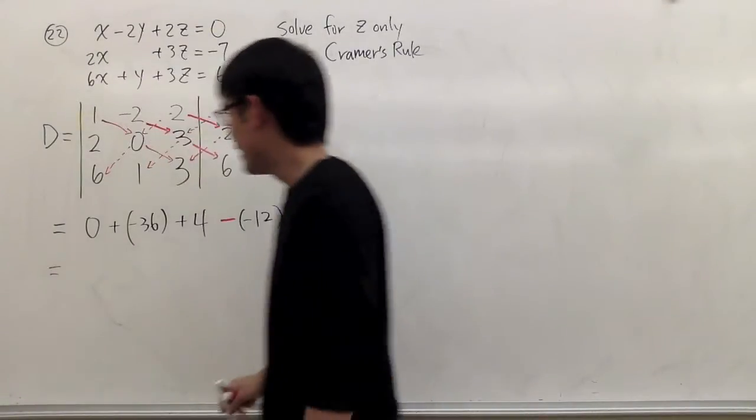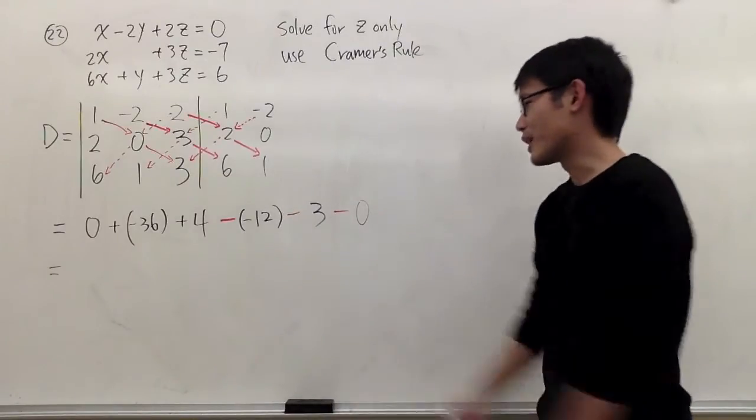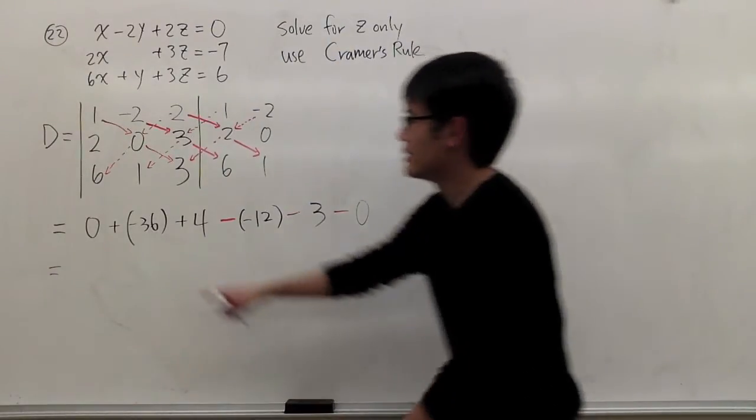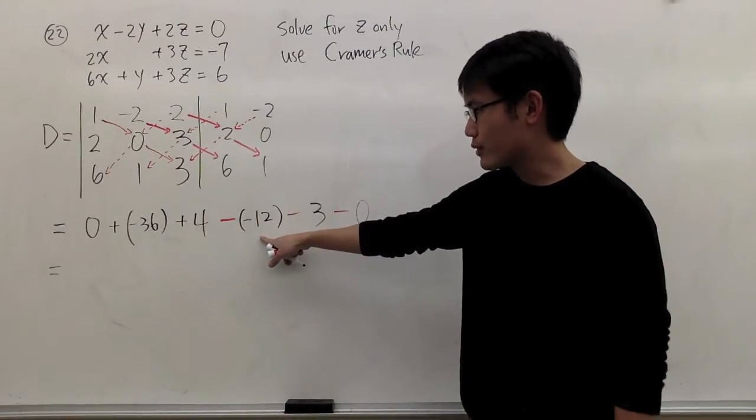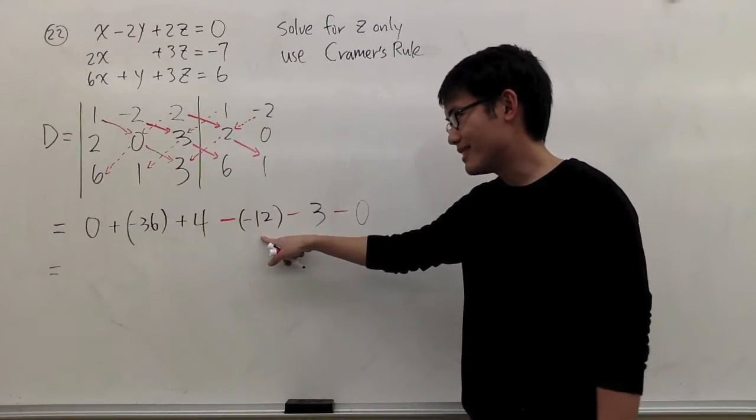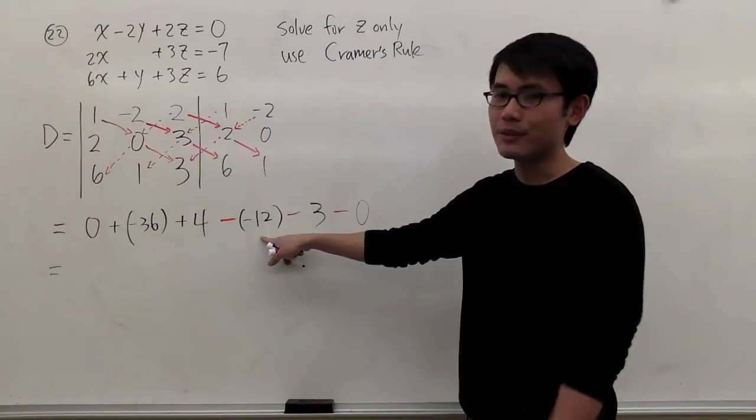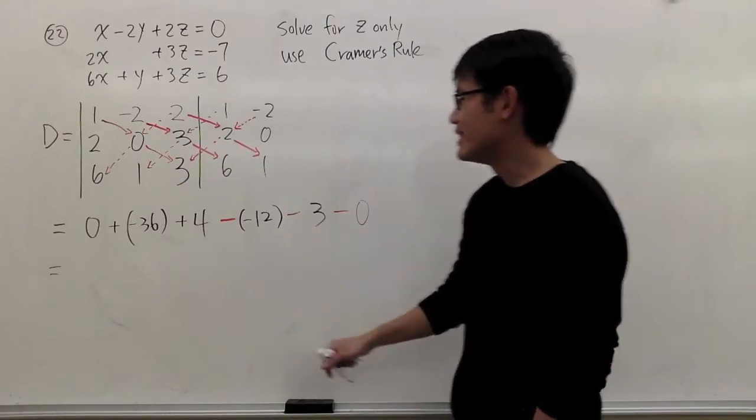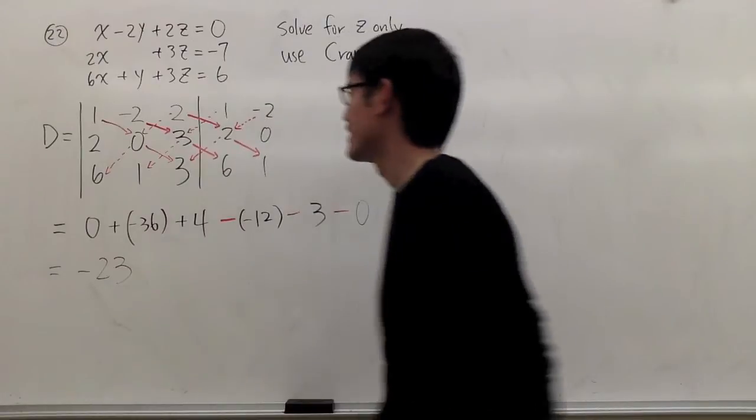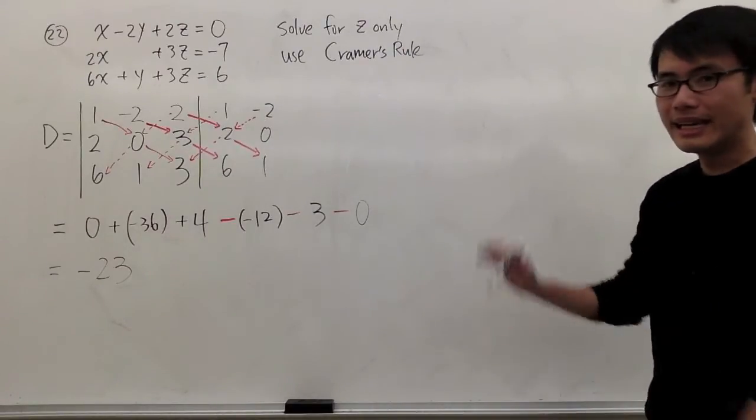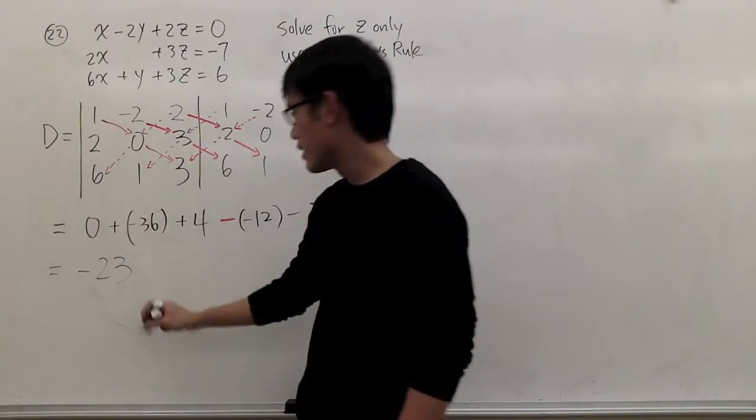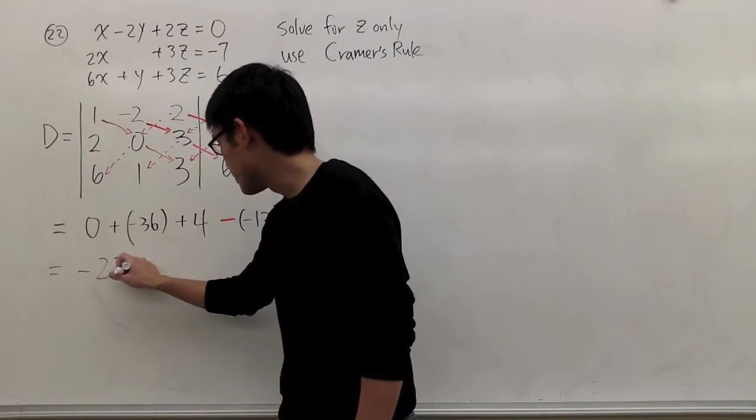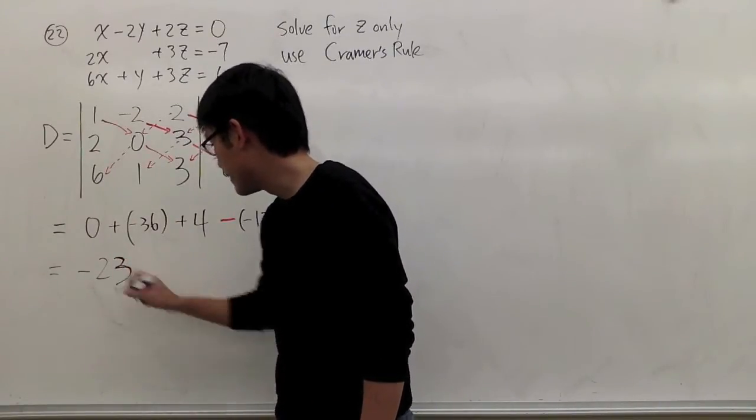So it's not that bad, and you can just use a calculator to add this up. This will be negative 32, plus 12, so it will be positive 20, negative 20. Minus 3, we get negative 23. That's my value of, that's the value for D. Negative 23 is very special. Negative 23.